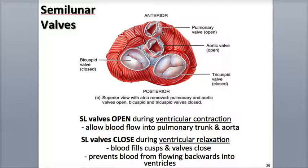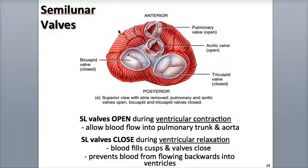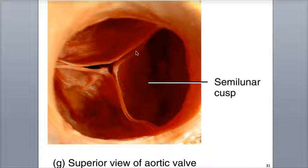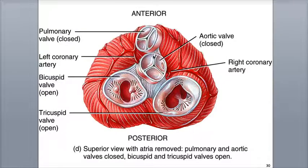The semilunar valves open when the pressure generated by the ventricles' contraction is greater than the pressure in the arteries. When the ventricles relax, the blood starts to flow back towards the heart. This blood fills up the semilunar valve cusps, which pushes together the edges of the cusps, forming a tight seal and closing the valve.